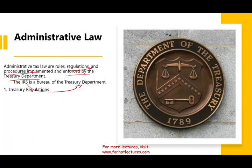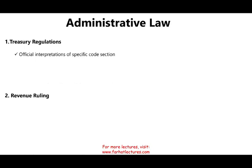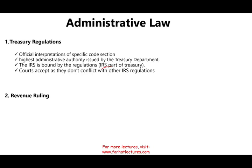These seven items are: Treasury regulations, revenue rulings, revenue procedures, private letter rulings (PLR), the Internal Revenue Bulletin, Technical Advice Memoranda, and IRS publications. Starting with Treasury regulations — these are the official interpretation of specific code law and the highest administrative authorities issued by the Treasury Department. The IRS is bound by these regulations since the IRS is part of the Treasury, and courts accept them as long as they don't conflict with other IRS regulations. Treasury regulations provide simple language, detail, and relevant practical guidance — they are an interpretation of the law.